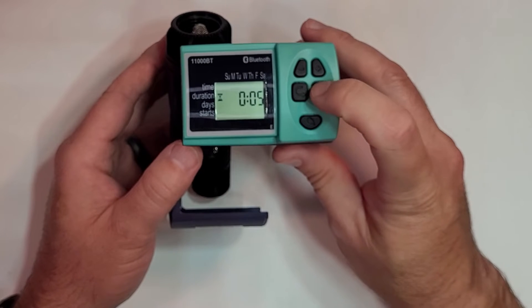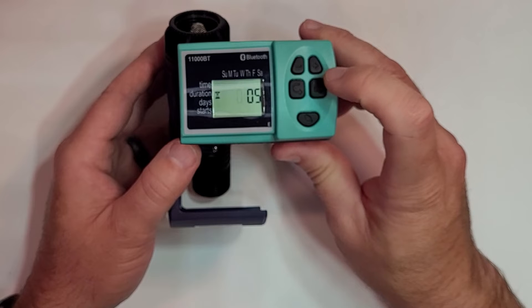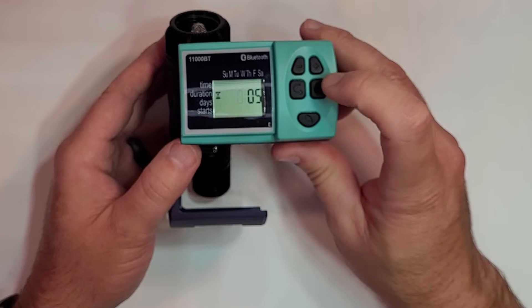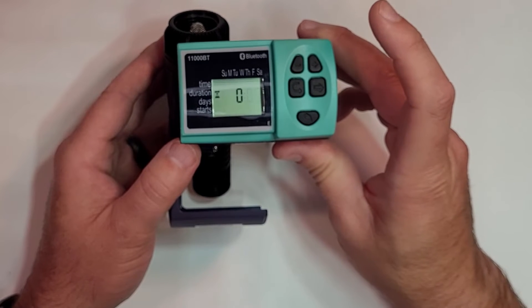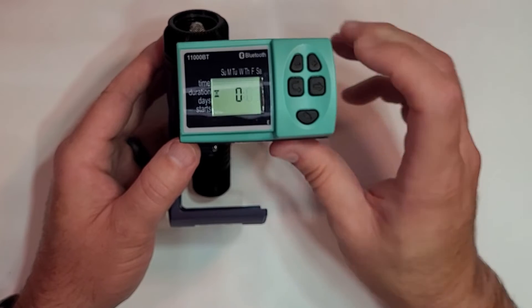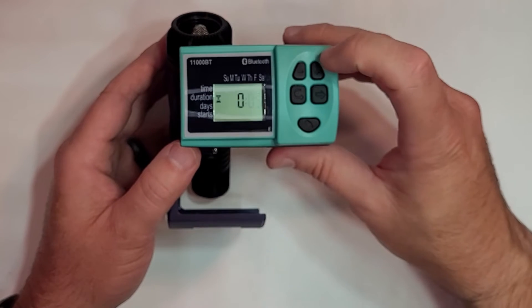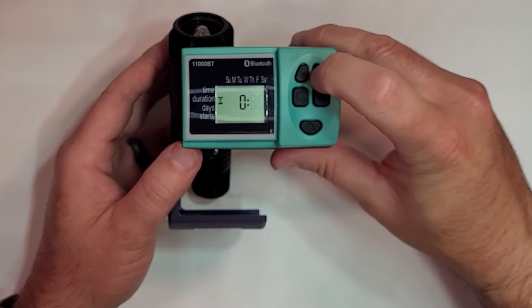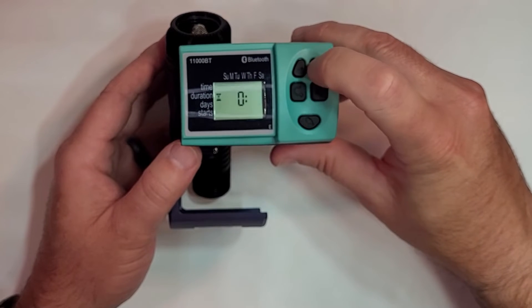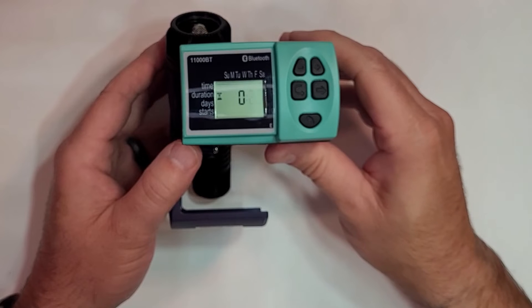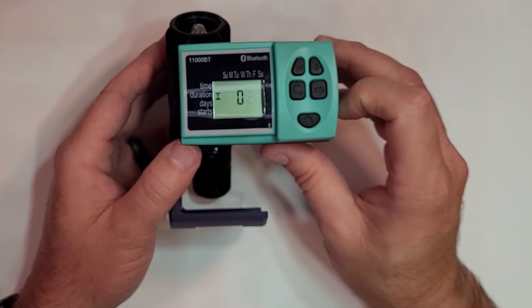When we press the enter button again, we're on the duration and we're going to press the right button to start the edit. We don't need hours, we need minutes, and we're going to set this duration of the sprinkler operation to 20 minutes. So we're just going to hit the plus sign until we get to 20 and then we're good to go there.